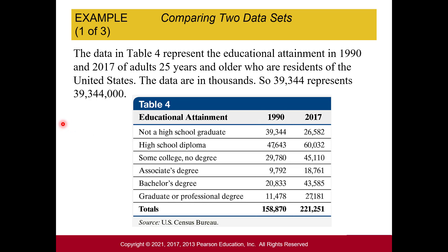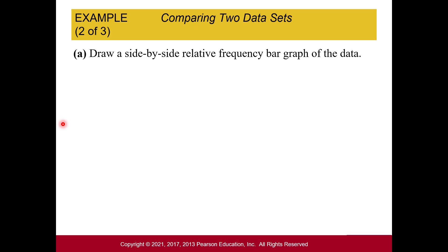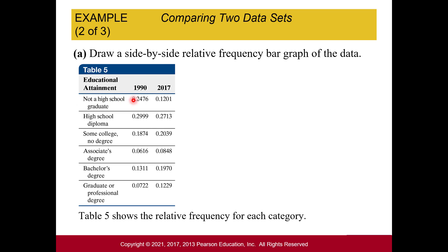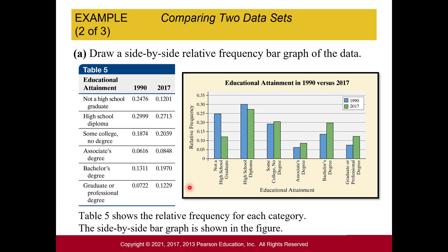We draw a side-by-side relative frequency bar graph of the education data. The values shown are the percents or decimal relative frequencies for each category, calculated as frequency divided by the total. In the graph, blue represents 1990 and green represents 2017, placed next to each other for each education category. The vertical axis shows our relative frequencies.